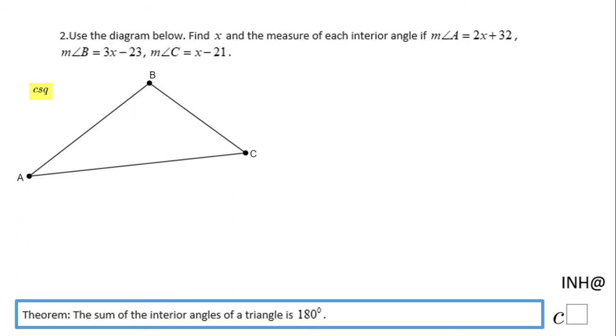If you notice down here, I have a theorem that says the sum of the interior angles of a triangle is 180°. So that's the thing I'm going to write here first: measure of angle A plus the measure of angle B plus the measure of angle C equals 180.